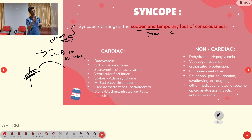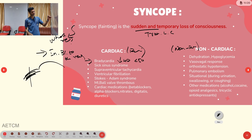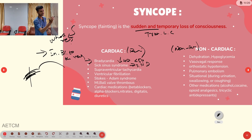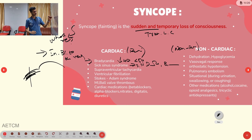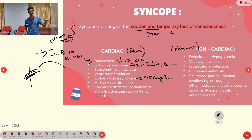Syncope causes are divided into cardiac (pump-related) and non-cardiac. Cardiac causes include bradycardia (less than 50 beats per minute per AHA), sick sinus syndrome (sinus node dysfunction with alternating tachycardia, bradycardia, and asystole), supraventricular tachycardia, ventricular fibrillation, and Stokes-Adams syndrome — where arrhythmia causes syncope even in the supine position.